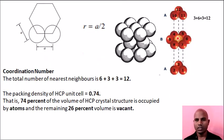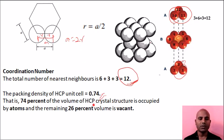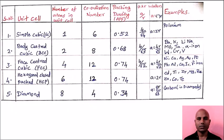Coordination number for HCP: 3 atoms below, 3 atoms above, and 6 surrounding — total = 12. Packing density of HCP: using A = 2R and substituting the number of atoms gives 74%. The remaining 26% is free/vacant space.